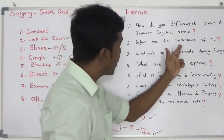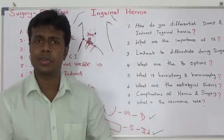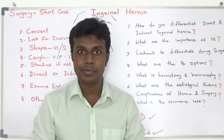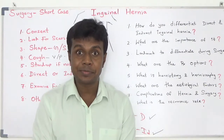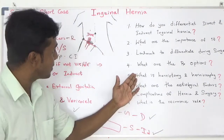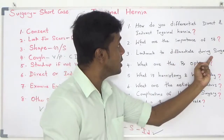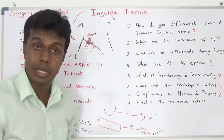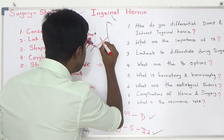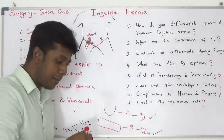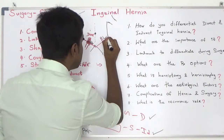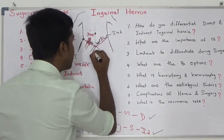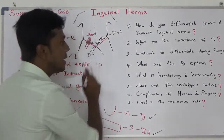Next question: what is the importance of knowing whether it is direct or indirect? Unfortunately, there is no clinical importance — it is mainly to test medical students. As for surgical landmarks: during surgery, you open just above the inguinal ligament and identify the inferior epigastric artery. If the lump arises lateral to it, it is indirect inguinal hernia; if medial, it is direct inguinal hernia.